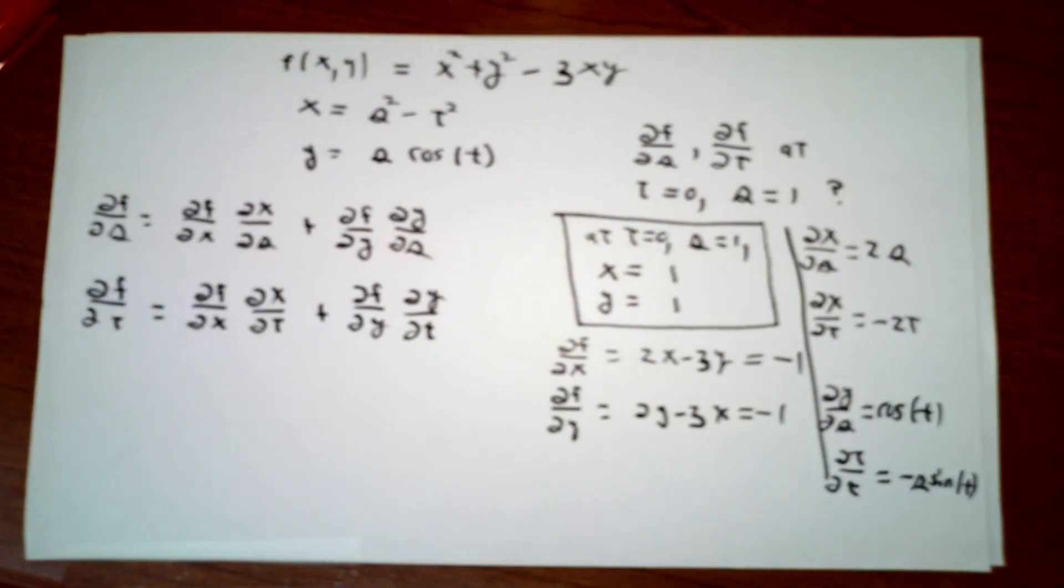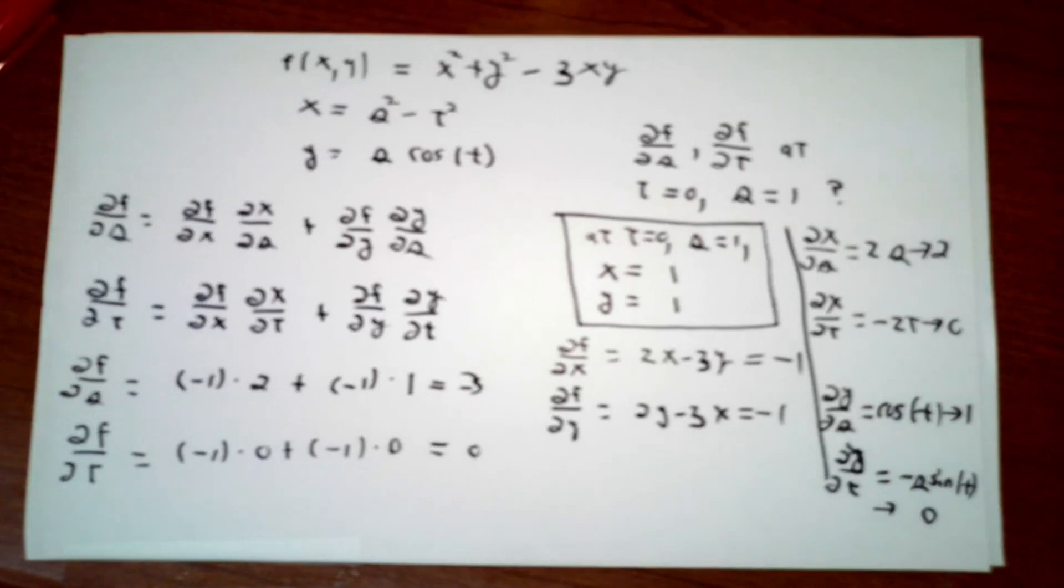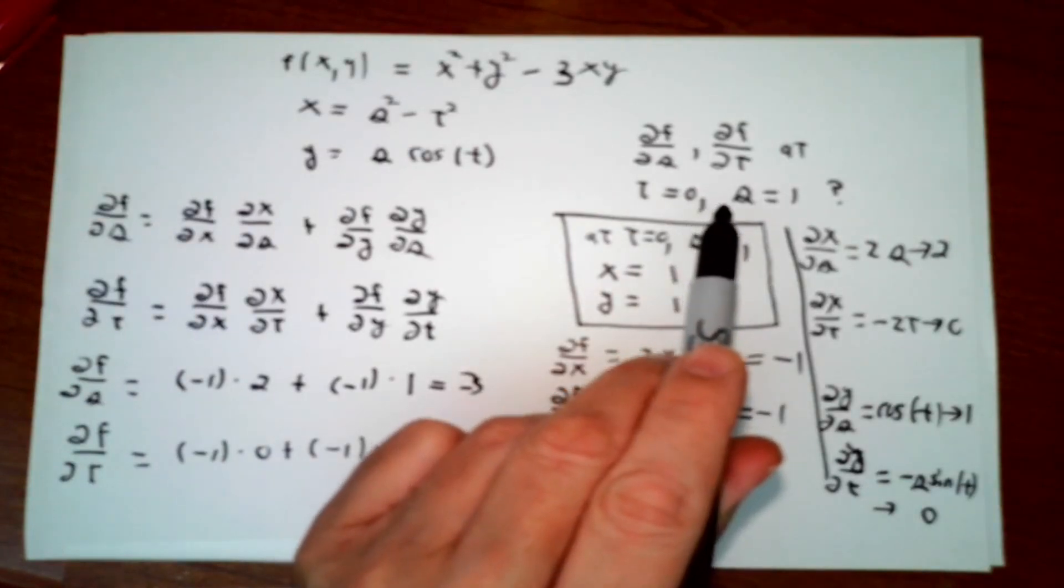I need to evaluate these derivatives at the place where t is 0 and s is 1. Having done that, we now know all of the numbers on the right-hand sides in these two equations. So we can then finish the calculation and find out what the partial of f with respect to s is, and partial of f with respect to t, at the point that we're interested in.